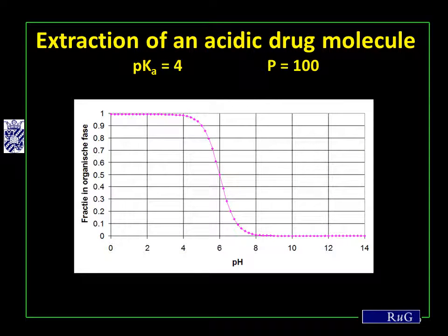If we look at an acidic drug molecule, the opposite is true. At low pH values, where the acid is protonated and the molecule is neutral, it is very well extracted into the organic phase. As the pH increases, the acid is deprotonated, becoming negatively charged and thus more hydrophilic. At pH 6, 50% is extracted into the organic phase while 50% remains in the aqueous phase, again due to the distribution coefficient of 100 in favor of the neutral molecule. At around pH 8, nothing is extracted any more into the organic phase.